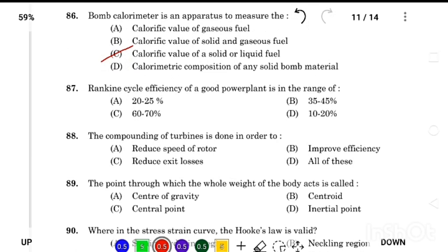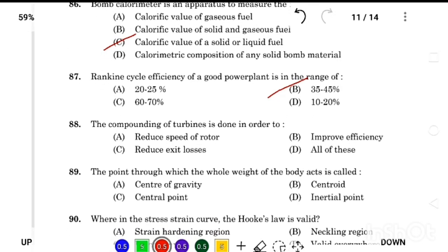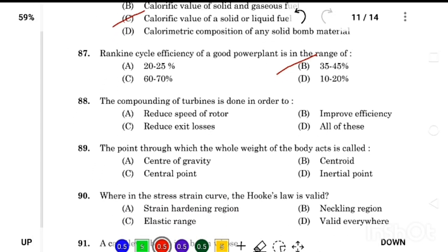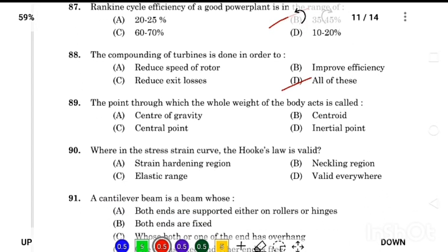Rankine cycle efficiency of a good power plant is in the range of Answer Option B, 35 to 45%. The compounding of turbines is done in order to Answer Option D, all of these. The point through which the whole weight of the body acts is called Answer Option A, center of gravity.